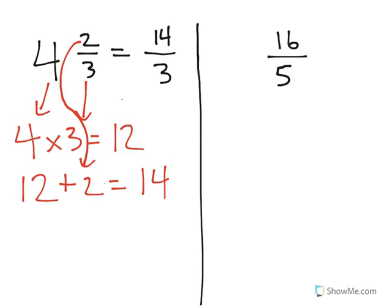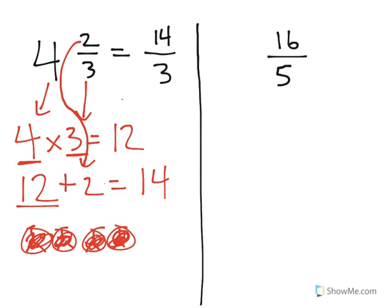And if you think about it, here's why it makes sense. If you remember our picture, we had 4 circles, 1, 2, 3, 4, that were each broken into 3 pieces that were all shaded all together, which gave us a total of 12 pieces, and then we took that 12 and we had to add in those 2 pieces on the 5th circle that were colored as well, which gives us our numerator of 14 and our denominator remains 3.